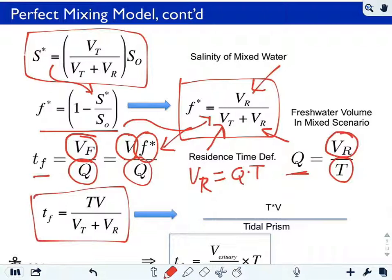That the flushing time is equal to a tidal cycle, about 44,000 seconds, 12.42 hours, times the volume of water in the estuary divided by VT, which is the volume of water that's introduced over the tidal cycle by the open ocean tidal forcing, and VR, which is the amount of volume of water, of fresh water that's introduced over the tidal cycle by the river discharge. That denominator is, as I said, the tidal prism.